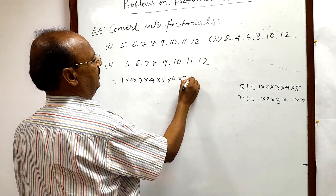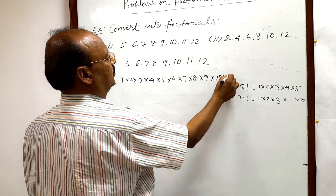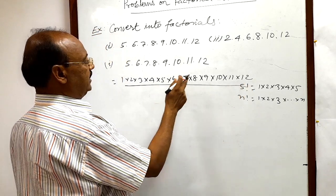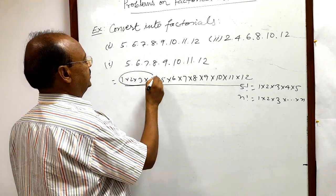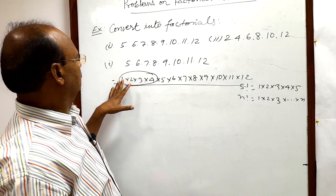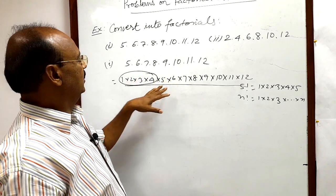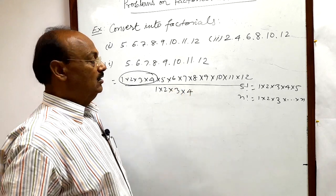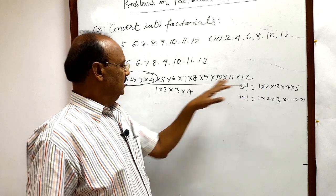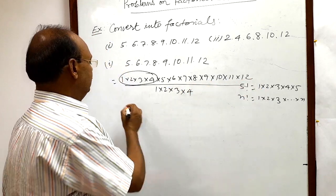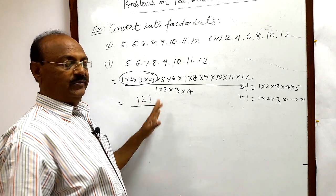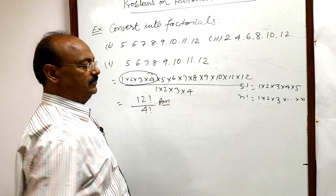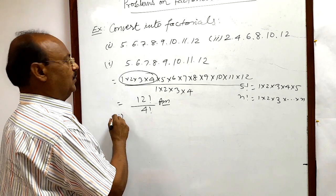So this can be written as 1 × 2 × 3 × 4 × 5 × 6 × 7 × 8 × 9 × 10 × 11 × 12, and we divide this expression by 1 × 2 × 3 × 4, because we introduced those factors in the numerator. The numerator, with multiplication from 1 up to 12, is 12!, and the denominator, 1 × 2 × 3 × 4, is 4!. So the answer is 12! / 4!.